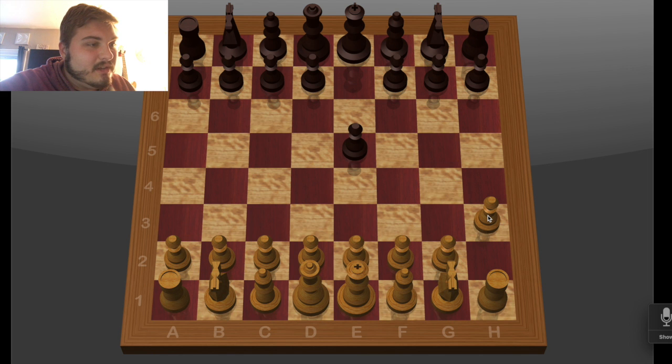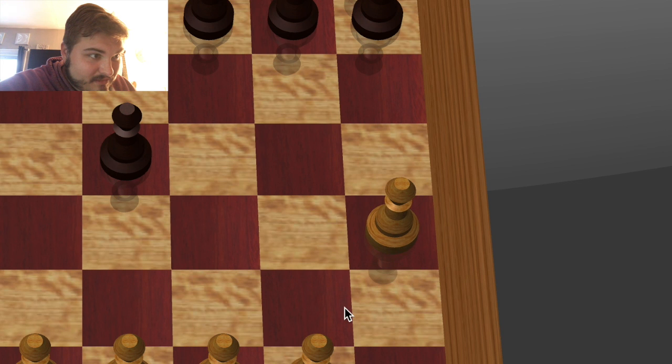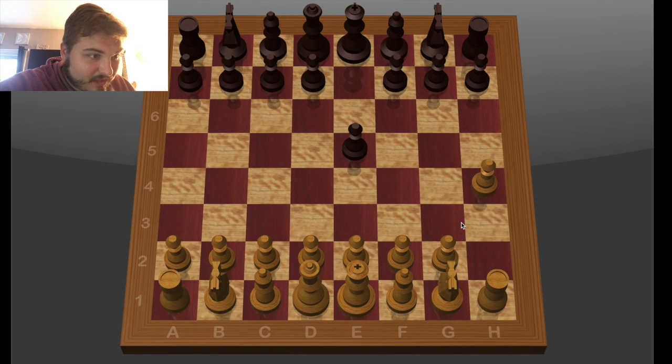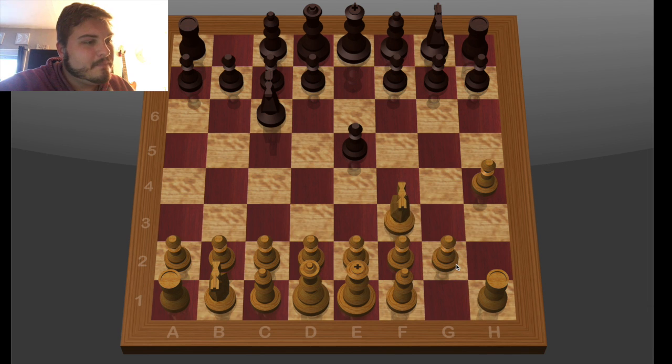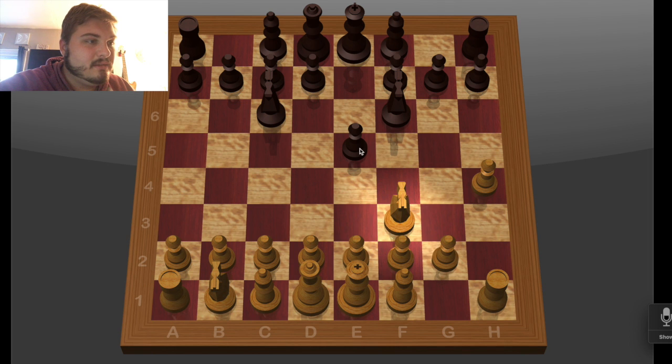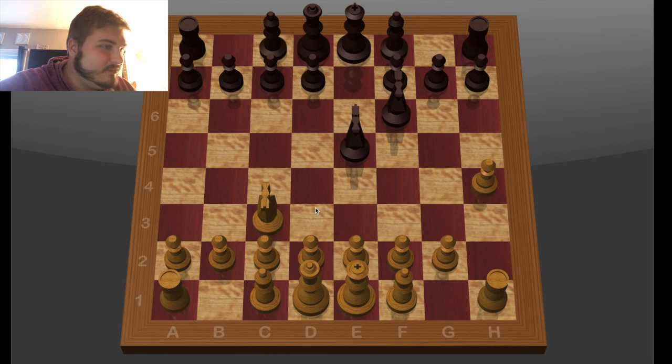Pawn E7 to E5. Oh, it's gonna talk. I didn't expect that. I'm going here, bud. Knight B8 to C6. That's scary. I don't like that. Can I do that? Can I do something like that? Yes? No? I'll move my knight out too, I guess.